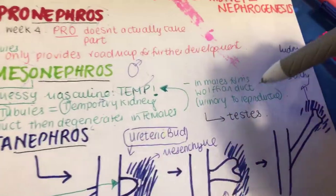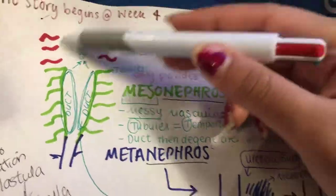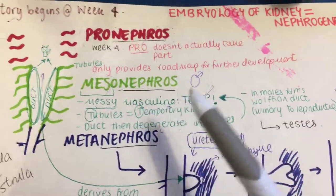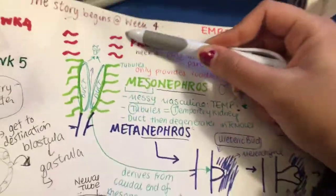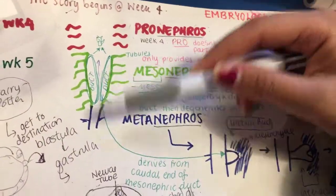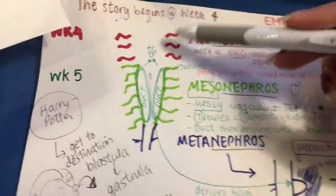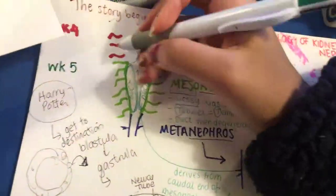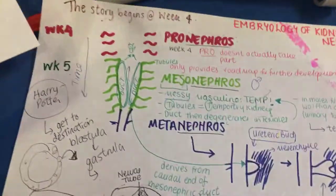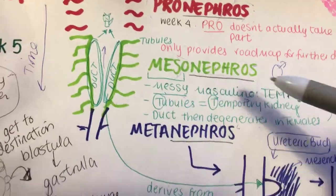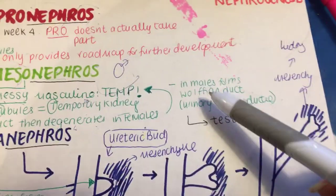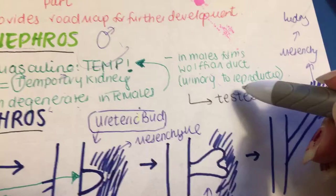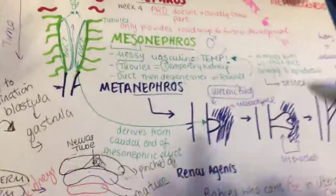The meso-nephros functions temporarily as a kidney, and the duct part of the meso-nephros is associated with the Wolffian duct — like a wolf helping guide the way. The duct degenerates in females, but in males it forms the Wolffian duct, which goes on to form urinary and reproductive structures, including the testes and epididymis.